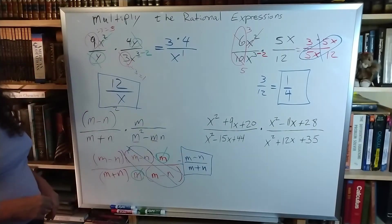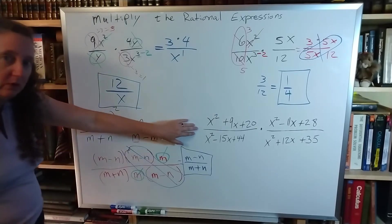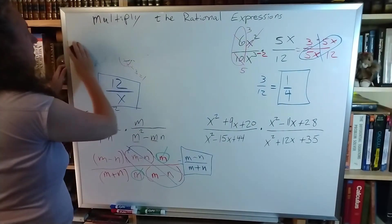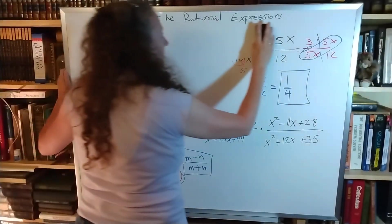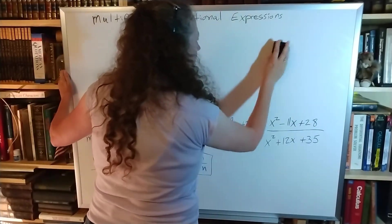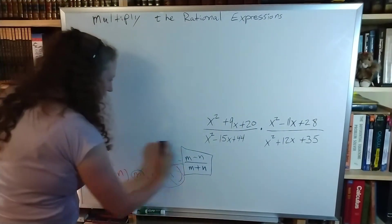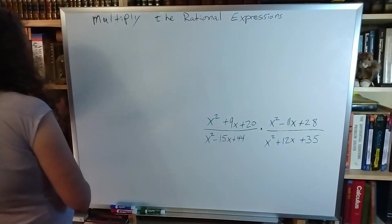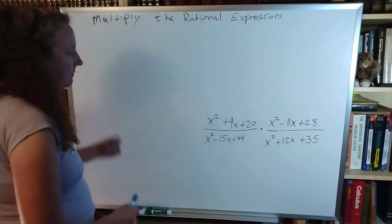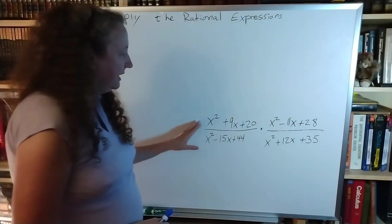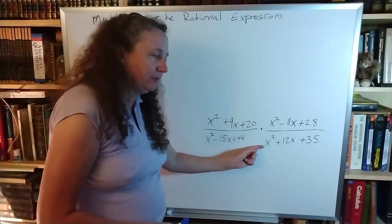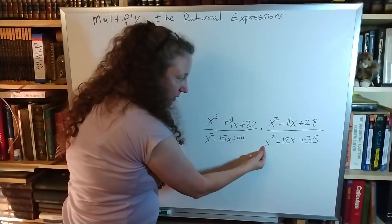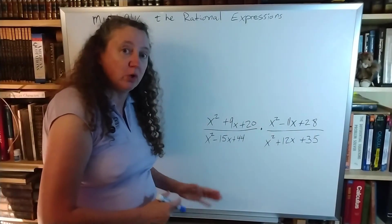So those three problems are finished. Now I have to do this one. This one's going to take a little bit more space, so I'm going to make room for it. So looking at these, I'm looking at my a terms first. I have one, I have one, I have one, and I have one. So I can use my shortcut on all of these.